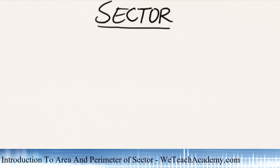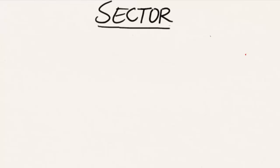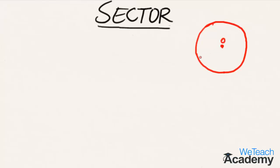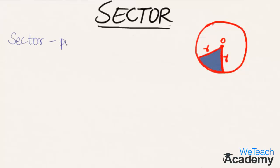Welcome to vdcheckacademy.com. Here we are going to discuss about sector. We have a circle with center O, and the distance from any point on the circle to the center is the radius, represented by the letter R. The polygon bounded by two radii and an arc is called a sector. A circular sector is the portion of a disk enclosed by an arc and two radii.